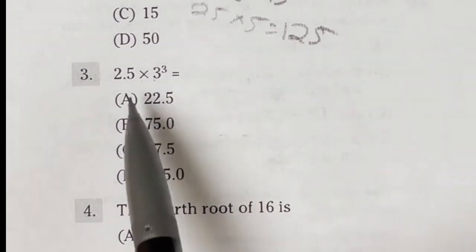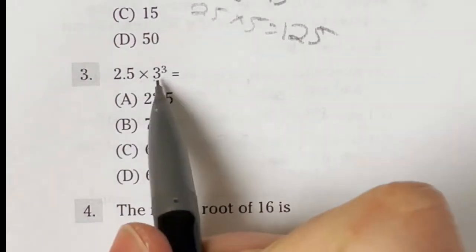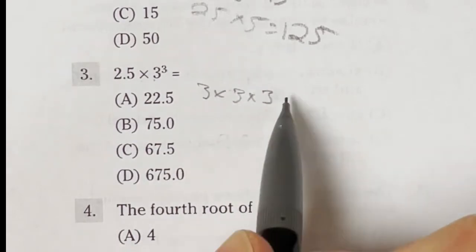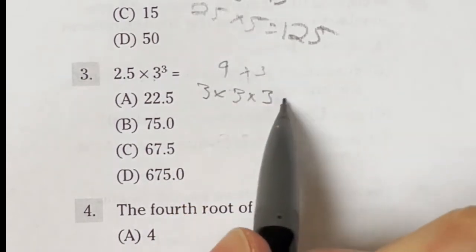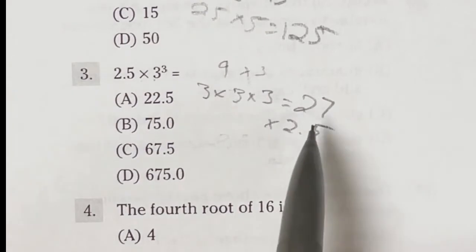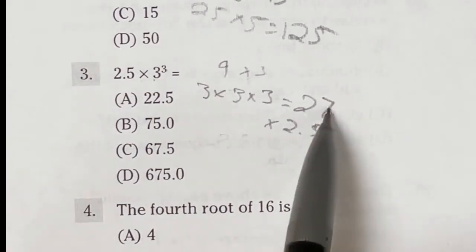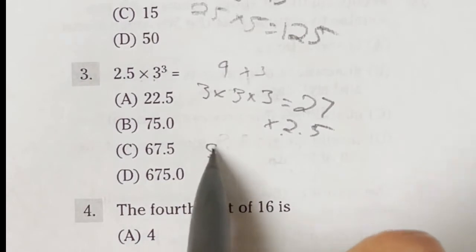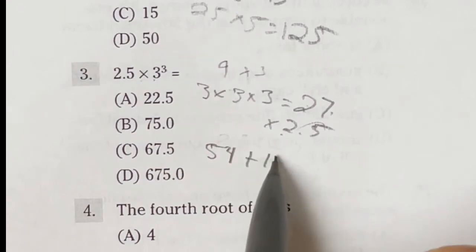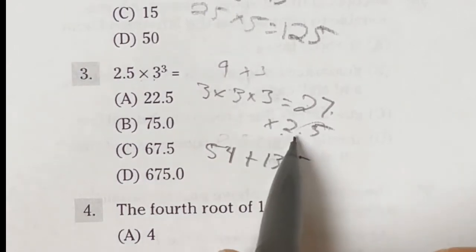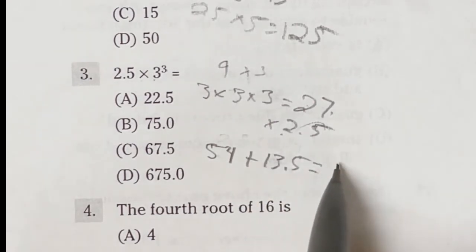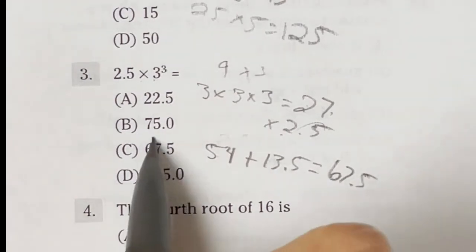Number 3 on the ASVAB says 2.5 times 3 to the third power. Let's start off with that 3 to the third power. That's going to be 3 times 3 times 3. That means that 3 times 3 is going to give me 9 times another 3 is going to be 27. Now I need to multiply that by the 2.5. Because we don't have a calculator here, I want to do this in two steps. 27 times 2 is going to give me 54. And the 0.5, half of 27, is 13.5. So if I multiply by 2.5, what I'm actually getting as an answer here is these two combined. So if I add those together, that's going to give me 67.5, which is answer C.